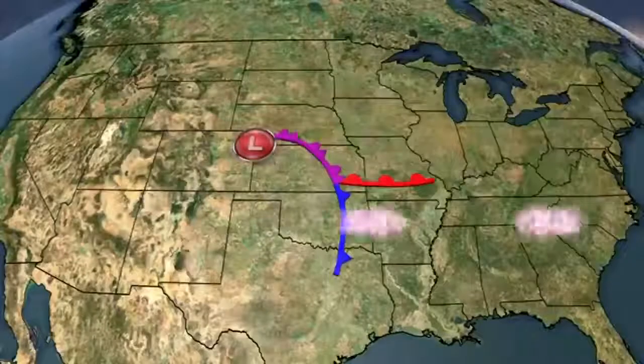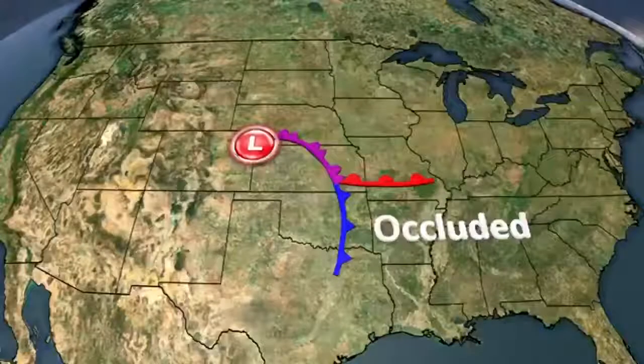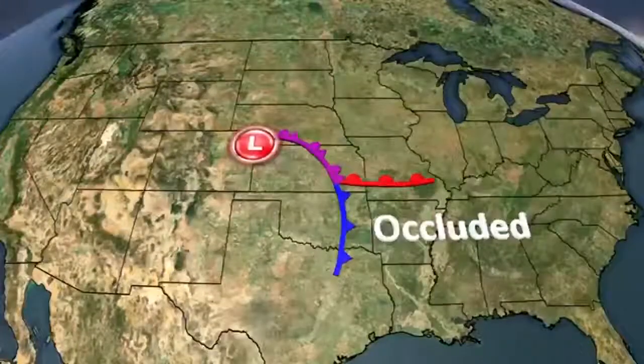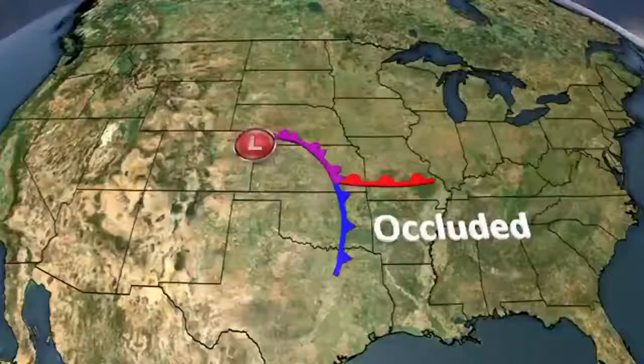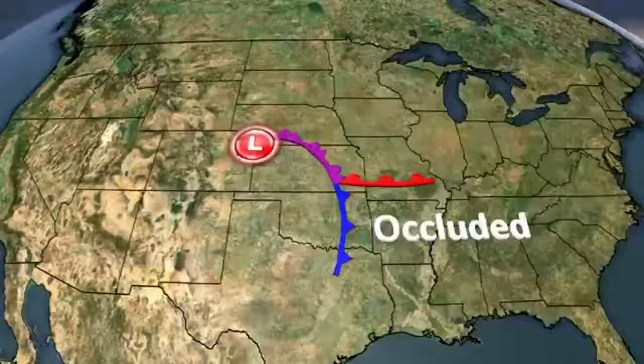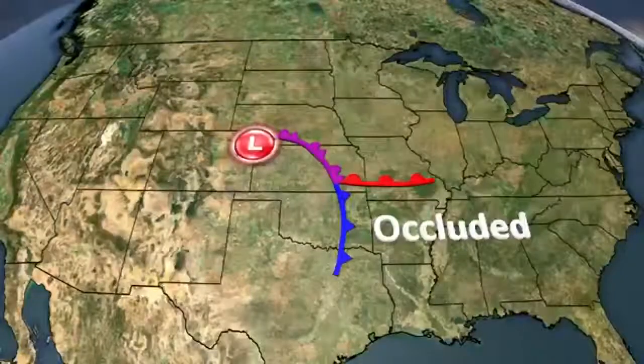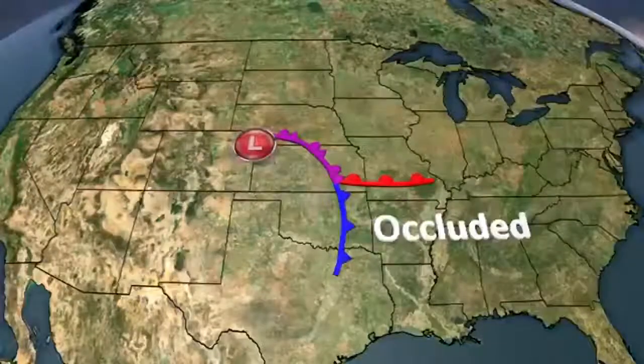The front after that is called an occluded front. This is when the cold front starts to take over the warm front. The majority of storm development happens at this stage.